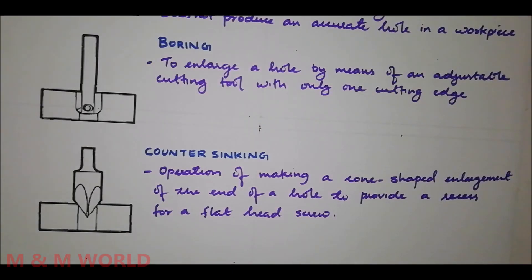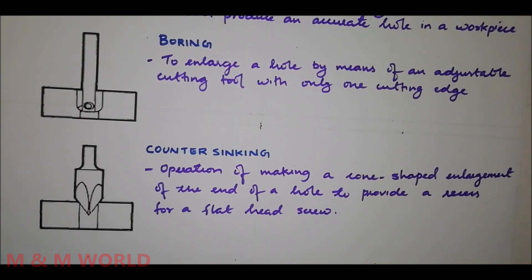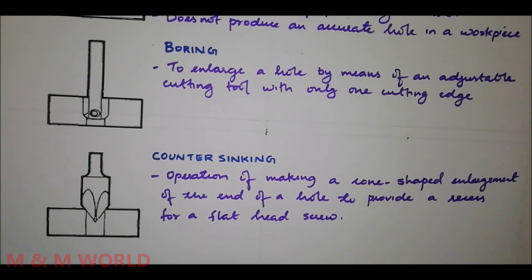The third one is counter sinking. Counter sinking is a metal cutting operation for making cone shaped enlargement at the start of an already drilled hole. The tool used is called counter sink and the standard counter sinks have 60 degree, 82 degree, or 90 degree included angle. The cutting edges of the tool are formed at the conical surface and the cutting speed is 25% less than that of drilling.